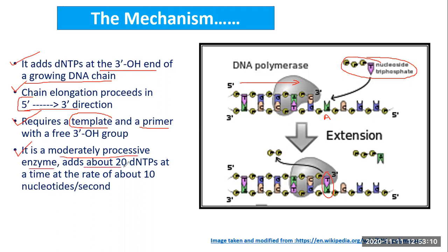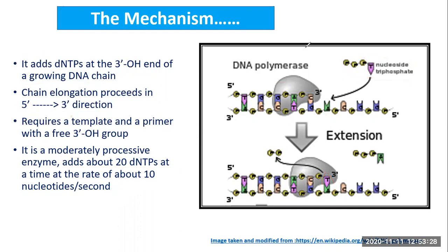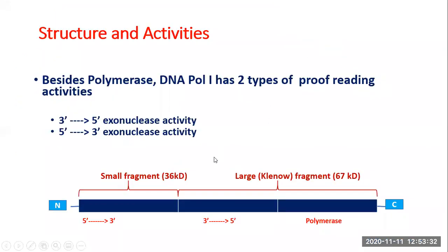DNA Pol I is a moderately processive enzyme because it can add only about 20 nucleotides at a time, and the rate of nucleotide addition is about 10 nucleotides per second. Comparing this with DNA Pol III, the main DNA synthesizing enzyme in bacteria, DNA Pol I's rate is considerably lower.